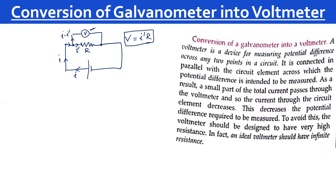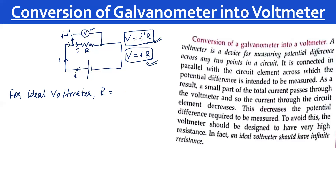The voltmeter will read i_dash × R, but mathematically all current I should flow through the component giving reading IR. However, the voltmeter is also a conducting device, so some current flows through it, causing the potential difference to change. For an ideal voltmeter, the resistance must be infinite so no current flows through it.